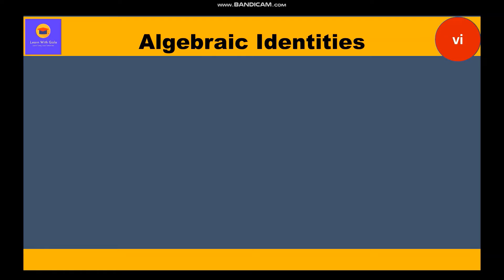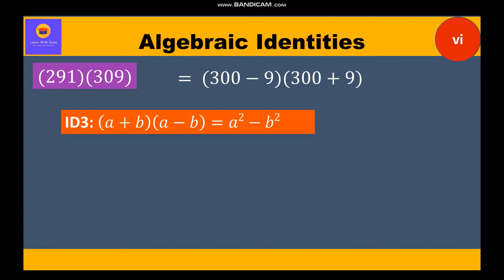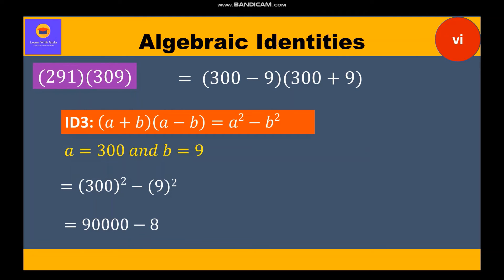Now let's move to the sixth part: 291 × 309. Now 291 can be written as (300 - 9) and 309 as (300 + 9). This is identity 3: (a + b)(a - b) = a² - b². Here a = 300 and b = 9. Substituting: 300² - 9² = 90,000 - 81 = 89,919. So this is our final answer.